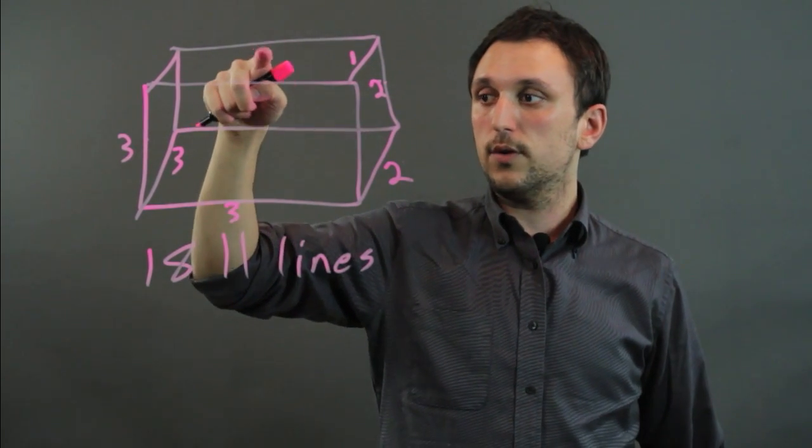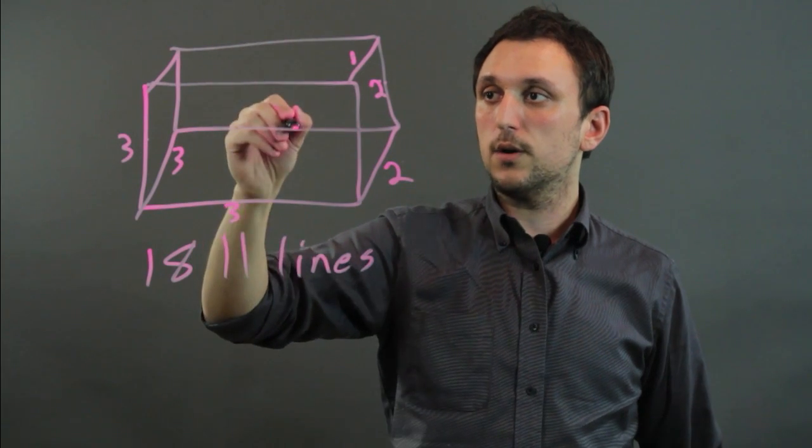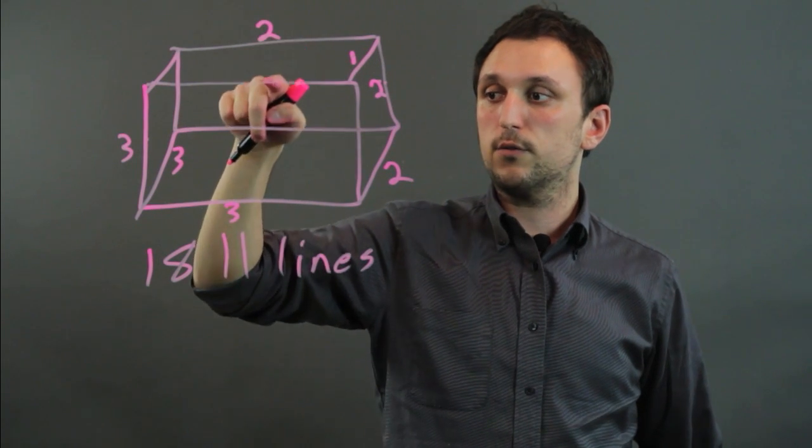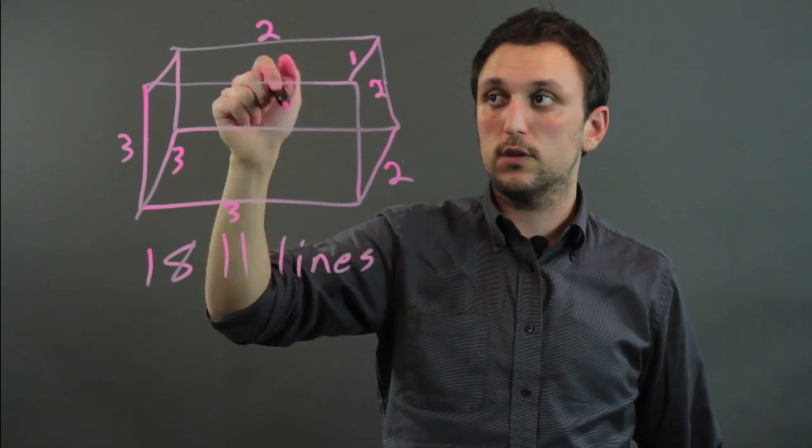We go to here, and we have here to here, and here down, so that's 2. We go to here, and we have this one, we already have that one, so there's just this to this, so there's 1.